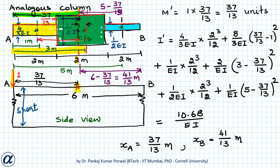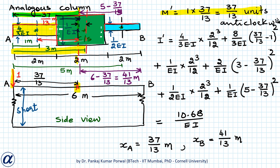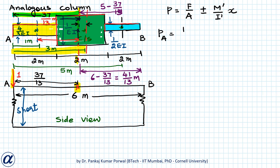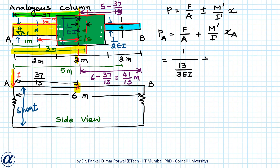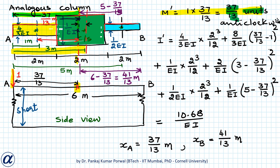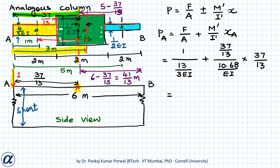Now we can find the pressures. Note that moment M' is in the anticlockwise sense. For PA the sign is positive, so PA equals F/A + (M'/I') × XA. That is 1 ÷ (13/3EI) + (37/13) ÷ (10.68/EI) × (37/13), which simplifies to 0.989EI.